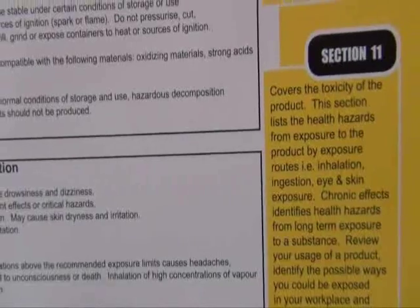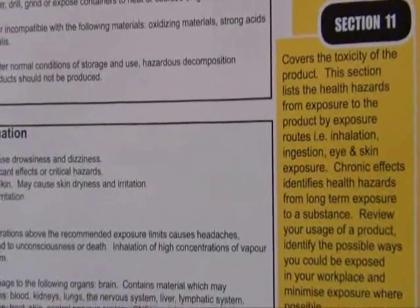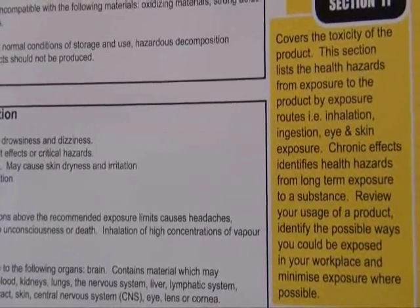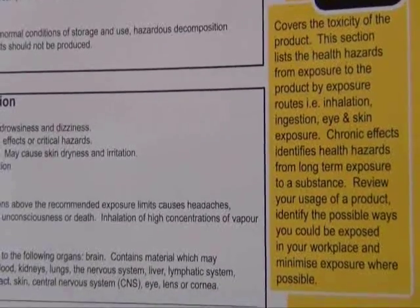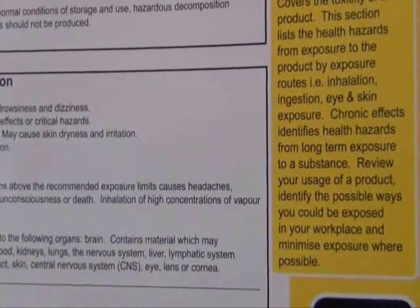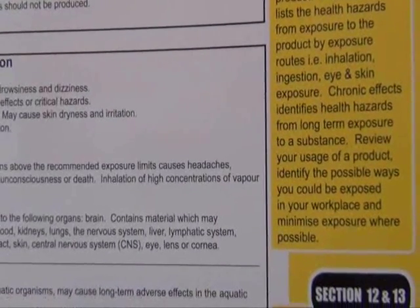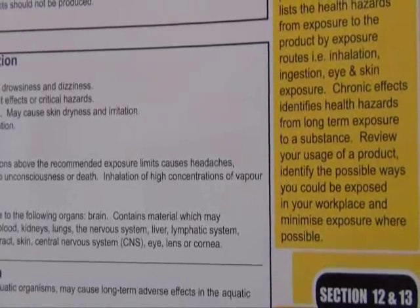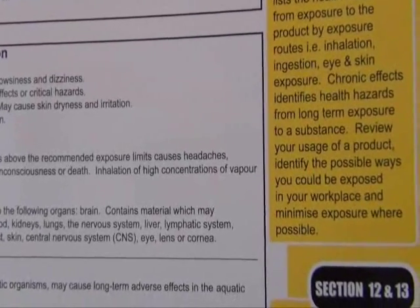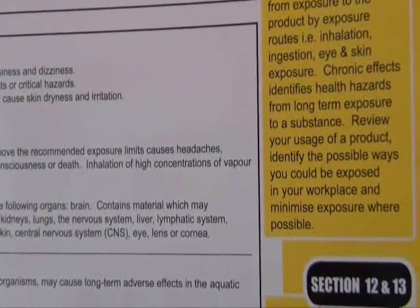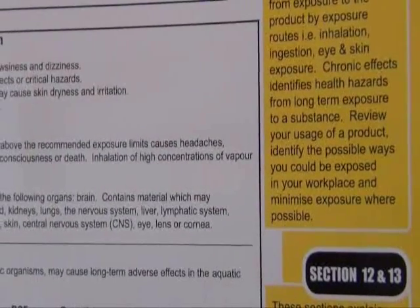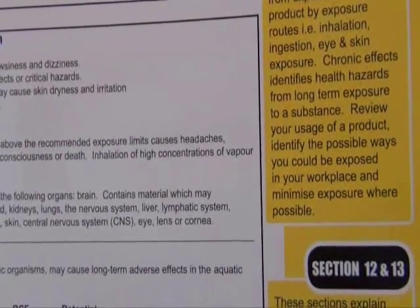Section 11 covers the toxicity of the product. This section lists the health hazards from exposure by exposure routes such as inhalation, ingestion, and eye and skin exposure. Chronic effects identifies health hazards from long-term exposure to a substance. Review your usage of a product, identify the possible ways you could be exposed in your workplace, and minimise exposure where possible.